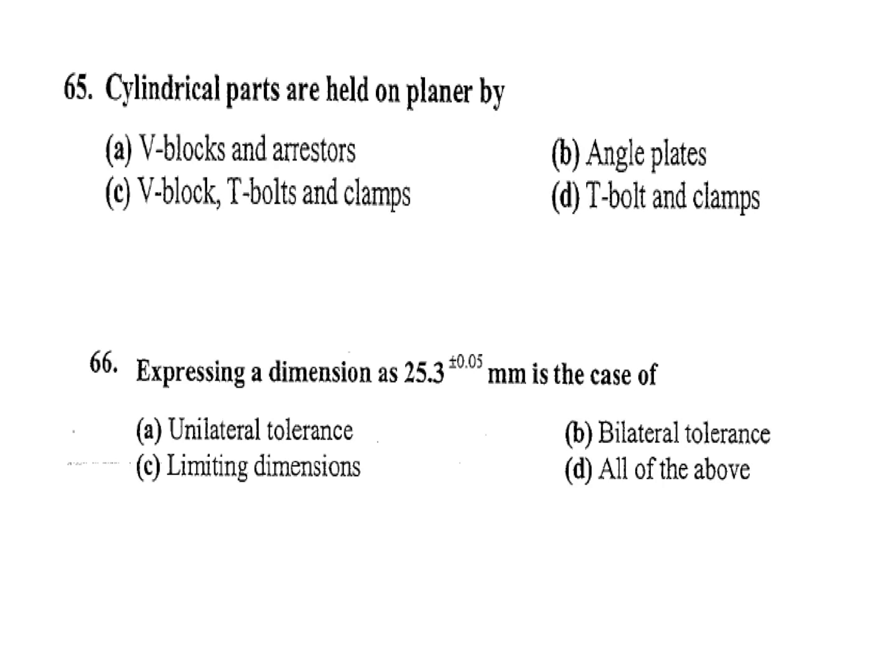Hello friends, welcome to my channel. Today I will solve ISRO production part 5. The question is: cylindrical parts are held on a planer by A) angle plates, B) V-blocks, C) V-block T-bolts and clamps, D) T-bolt and clamps. Cylindrical parts should be held by a V-block, so B and D are not possible. The answer is C — V-block, T-bolts and clamps.